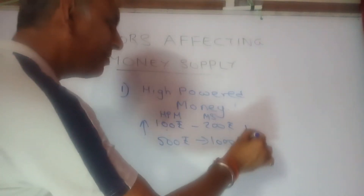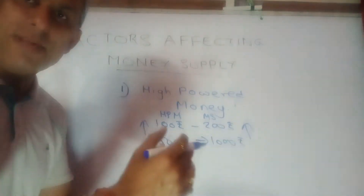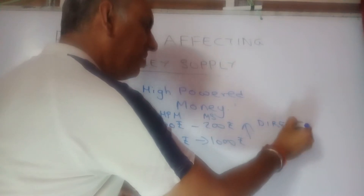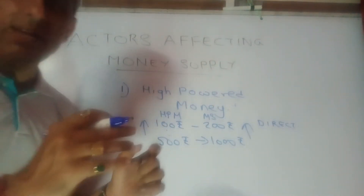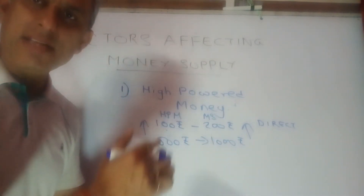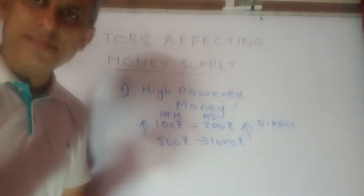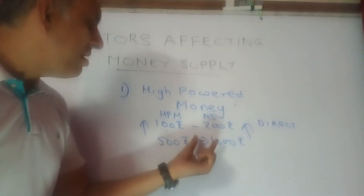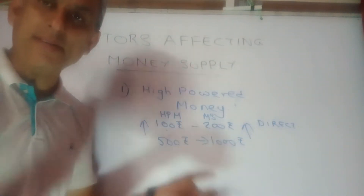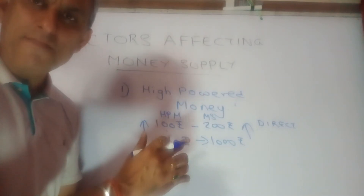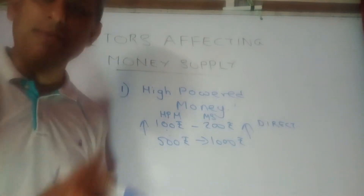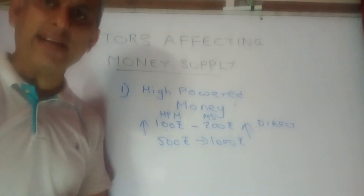So if HPM is 100, money supply can be 200; but if HPM is 500, money supply can be 1000. If HPM is increasing, you also find money supply is increasing — both move in the same direction. There is a direct relationship between high powered money and money supply: the greater the amount of HPM, the greater shall be the amount of money supply. That is factor number one.